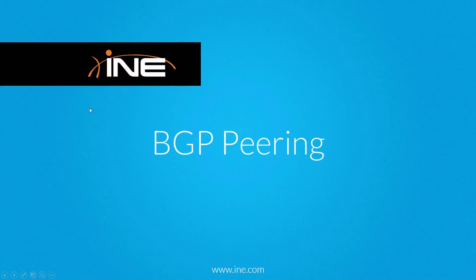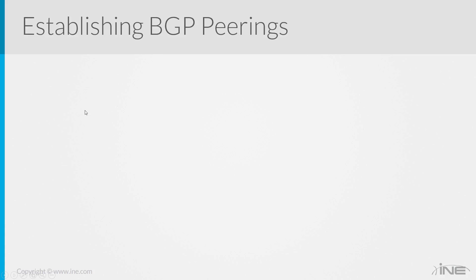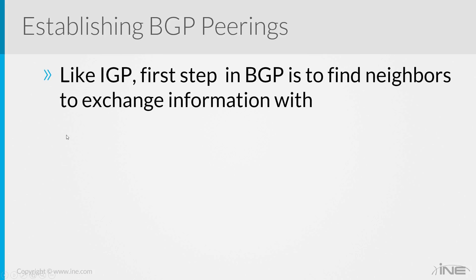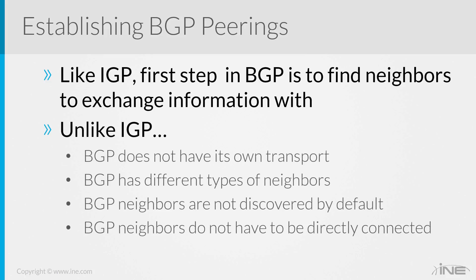In this video, we're going to take a look at BGP Peerings. When it comes to establishing BGP Peerings, there are several things we need to break down in order to understand what we need to do. First and foremost, like IGP, the first step in BGP is to find neighbors to exchange information with. Unlike IGP, BGP does not have its own transport.